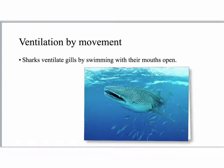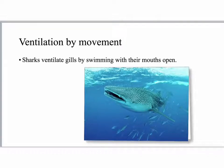Some organisms, such as sharks, ventilate their gills by swimming with their mouths open. As they swim, this creates a current going through their mouths and across their gills, which helps them to be more efficient at exchanging gases using their gills in the water.